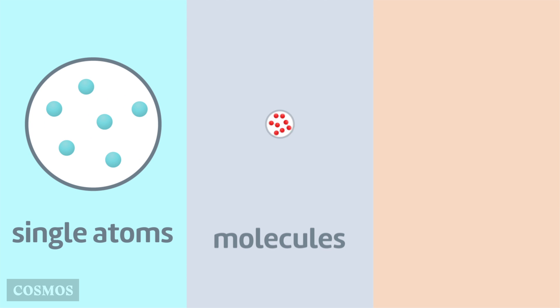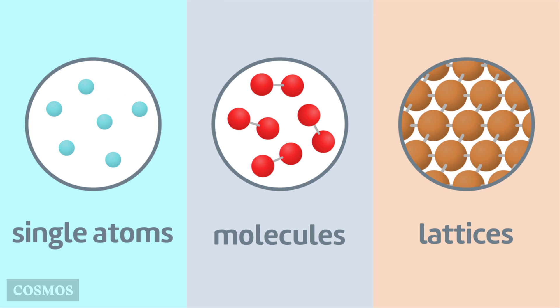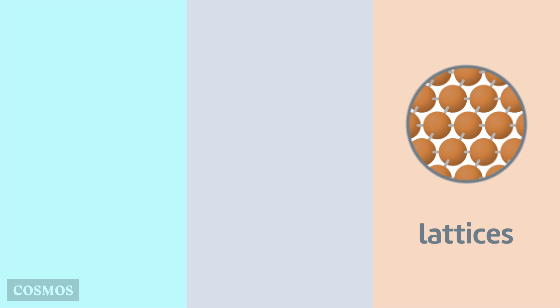So understanding the three ways that atoms can be arranged is a first step in explaining the vast differences between the elements.